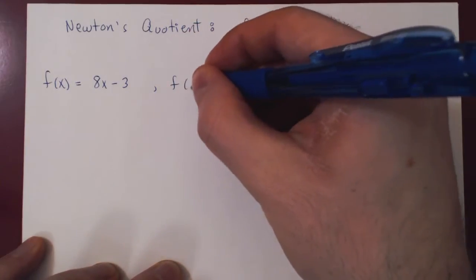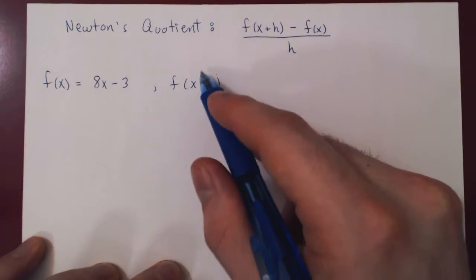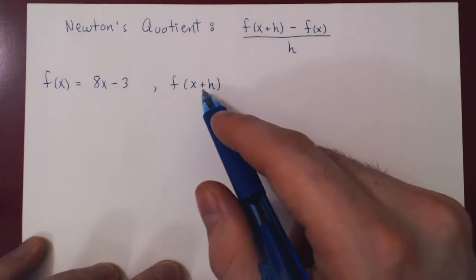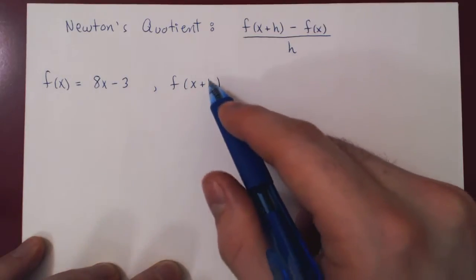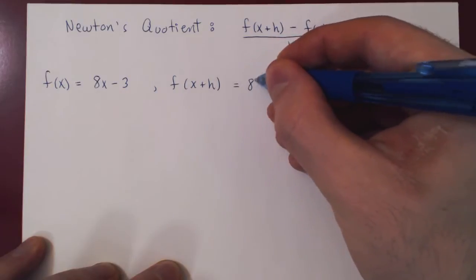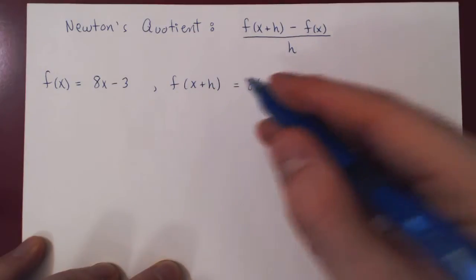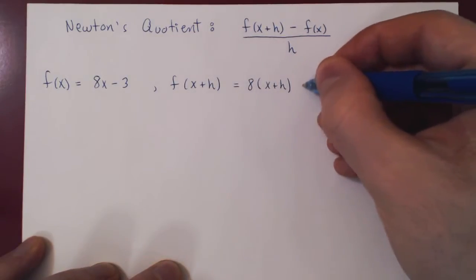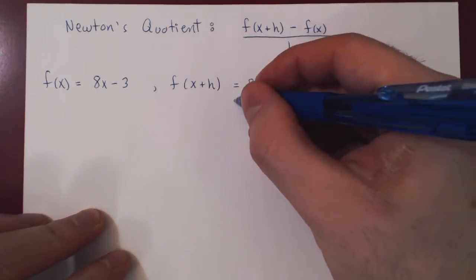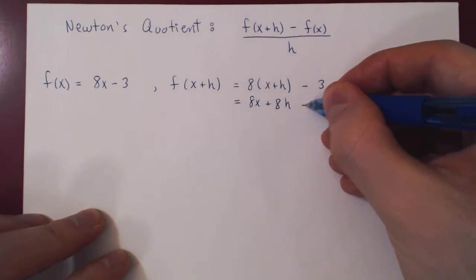What is f of x plus h? We replace the old argument x by the new argument x plus h everywhere. So we have 8 times, and be careful to open your parentheses because x is multiplied by 8, so all of x plus h must be multiplied by 8, minus 3. If you multiply out, you get 8x plus 8h minus 3.